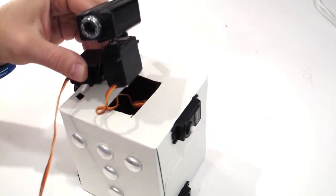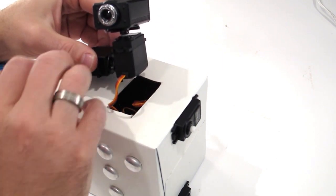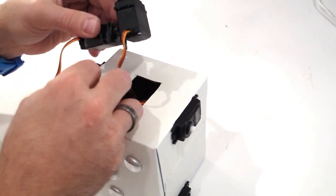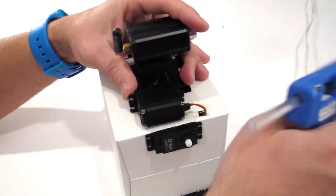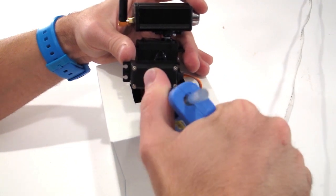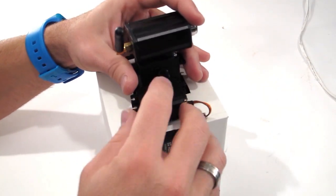Push the servo wires through the holes in the robot shell. Test fit the servo and camera assembly on the top of your robot. Attach the camera assembly to the top of your robot with the hot glue gun.